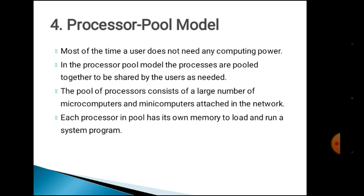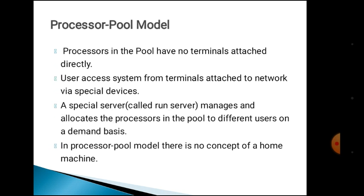The fourth model is the processor pool model. Most of the time, users do not need any computing power. In this model, processes are pooled together to be shared by users as needed. The pool of processors consists of a large number of microcomputers and mini computers attached to the network. Each processor in the pool has its own memory to load and run a system program. Processors in the pool have no terminals attached directly. A special server called a run server manages and allocates processors in the pool to different users on a demand basis.